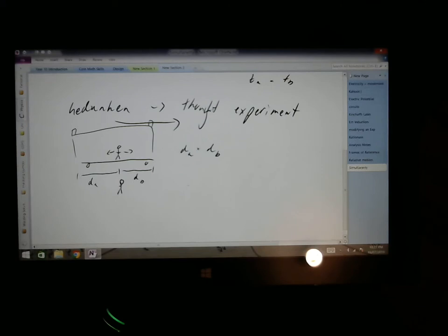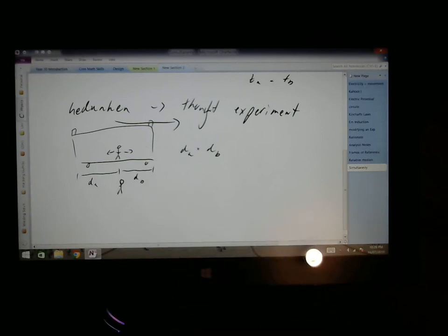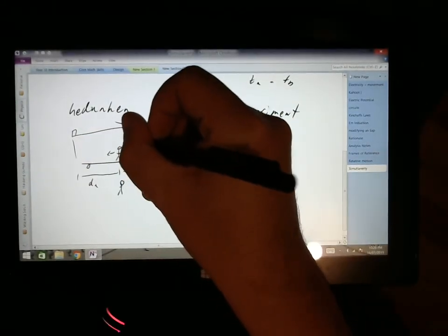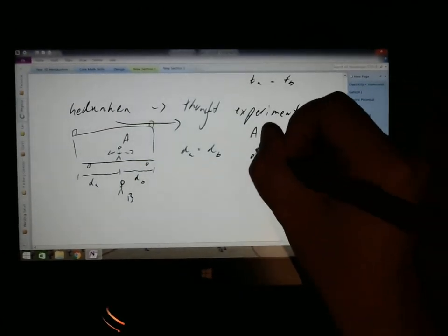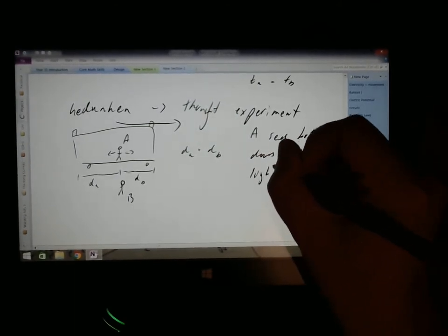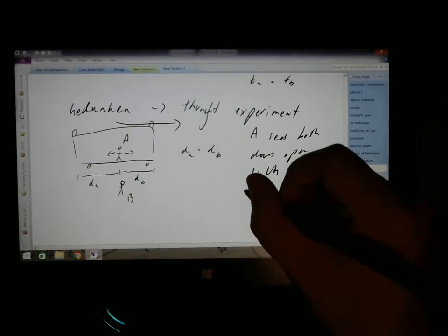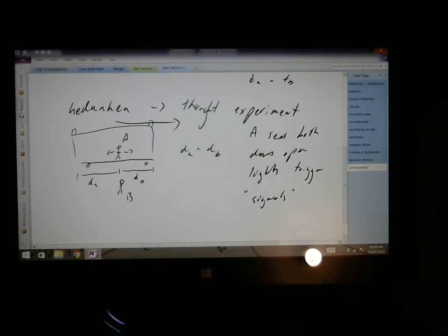Now, in his reference frame, because remember the second postulate of special relativity, light travels at the speed of light. So, if he's in the middle, then the light should travel to one end and the other end, and will trigger the event at each end. The distance is the same. The velocity of light is the same. The speed of light is the same. So, the time must be the same. So, we'll call him Observer A. Observer A sees both doors open. And to him, he would see them simultaneously. In his reference frame, it happens simultaneously.